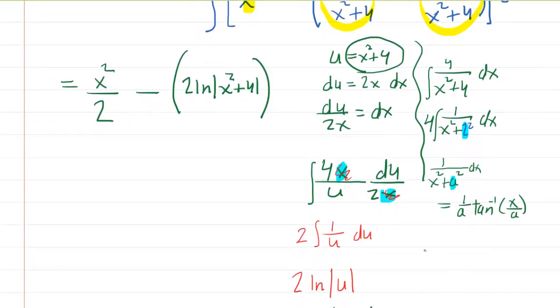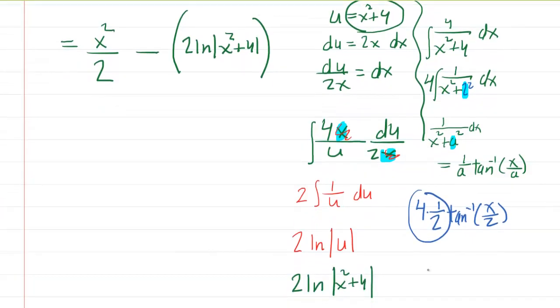So in other words, our integral becomes 4 times 1 over 2 arc tangent of x over 2. And then 4 times that half can just become 2. So now you have 2 arc tan of x over 2. So that would complete the third integral. We can put that back into where we had our problem going.